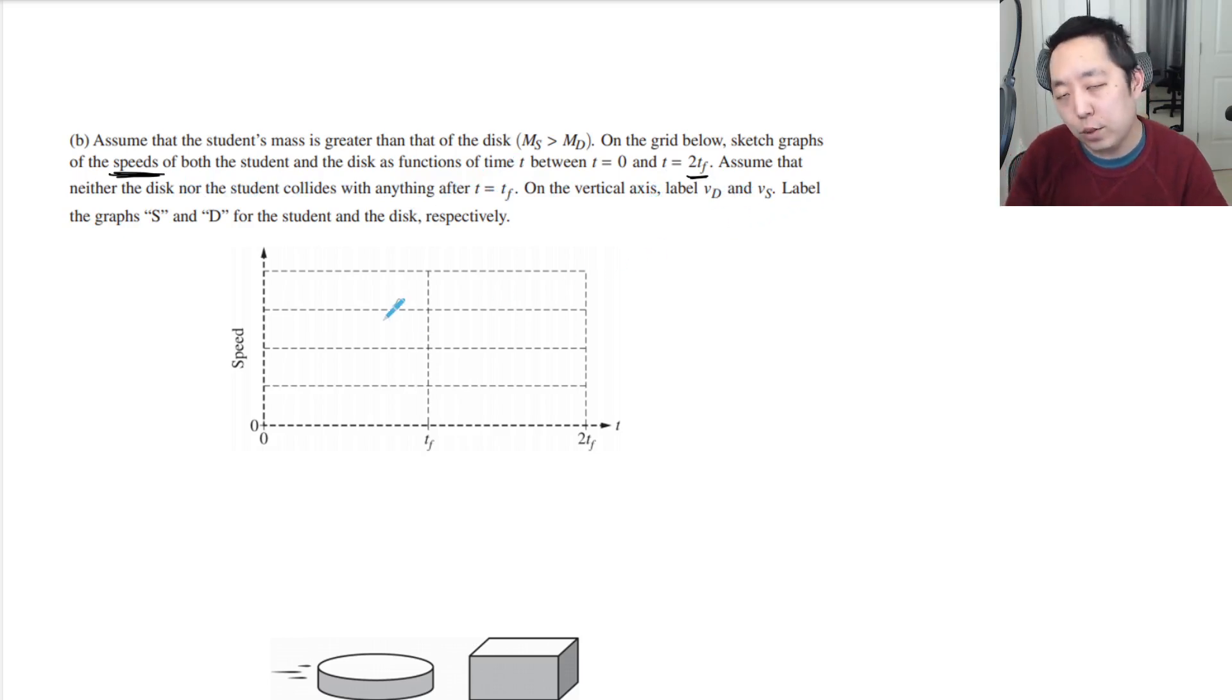If he's doing a constant force during that motion, his change in velocity is constant. MS is greater than MD, so we'll do the disk first. He'll go up linearly as the impulse is applied, and then he's just going to coast freely at the same speed after that.